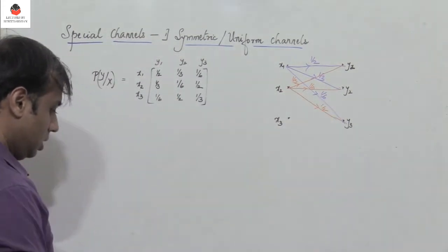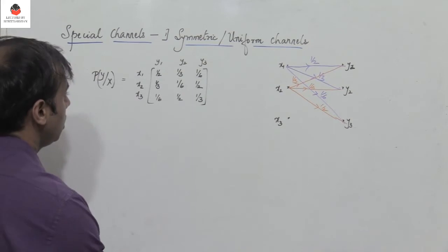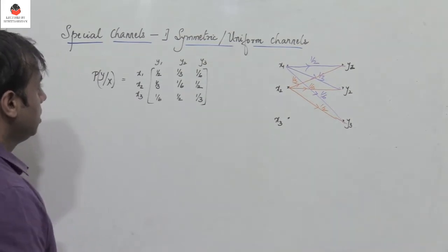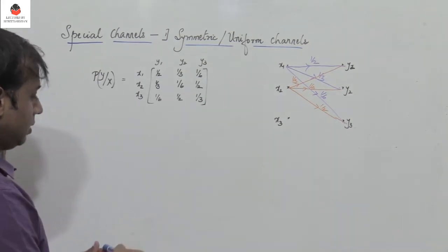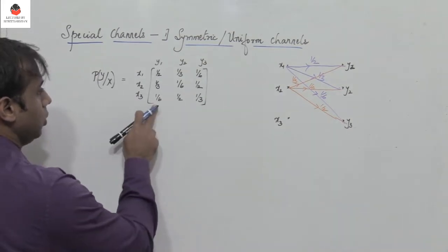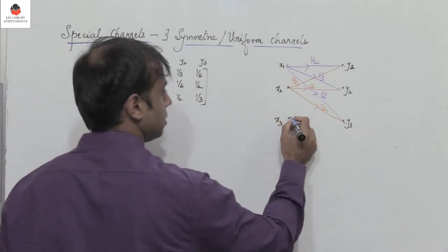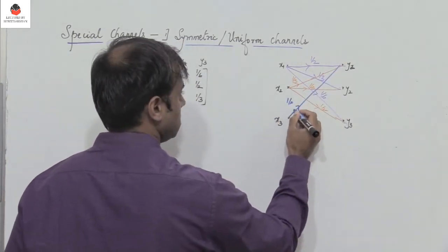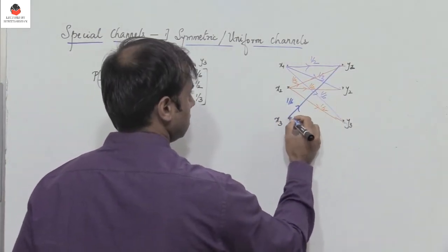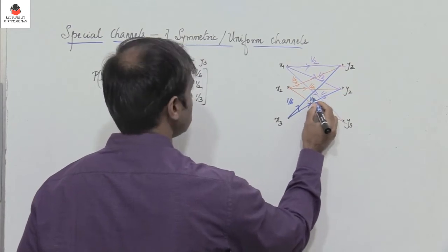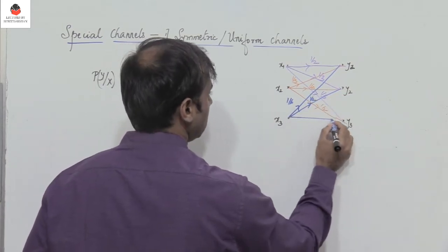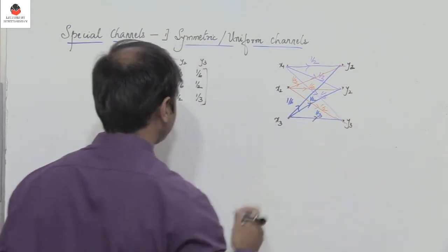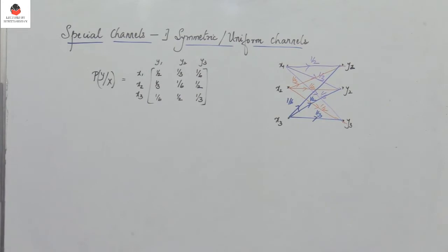P of y1 given x3 is 1/6, next you have 1/2, and then 1/3. So this is an example of a symmetric or uniform channel.